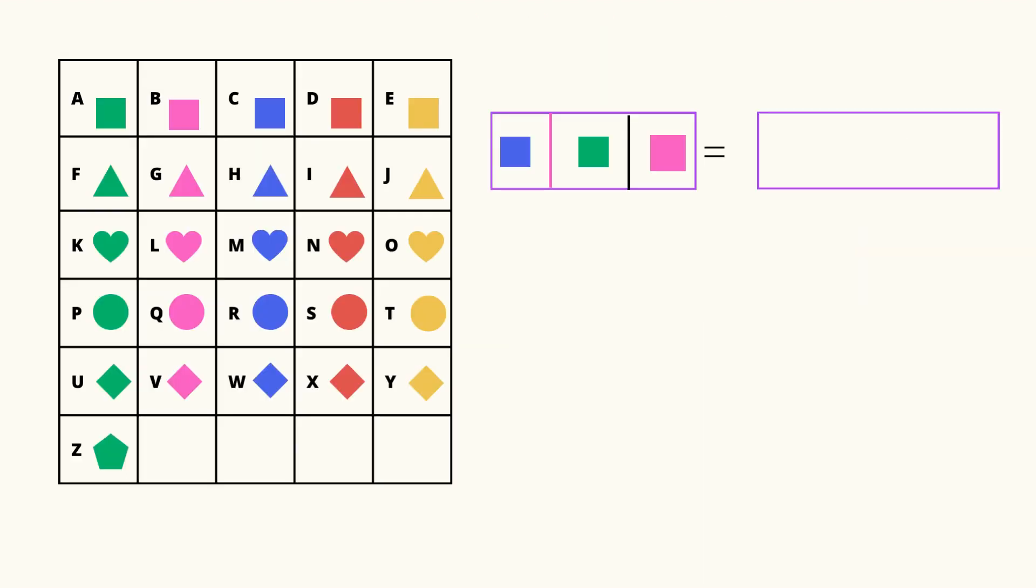The first word: a blue square is C, a green square is A, a pink square is B. C-A-B, cab. This is how you have to find the word. Okay? The answer is cab.